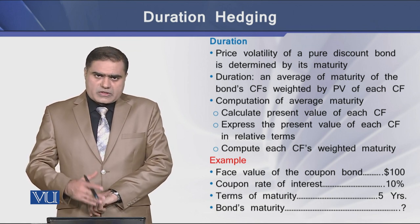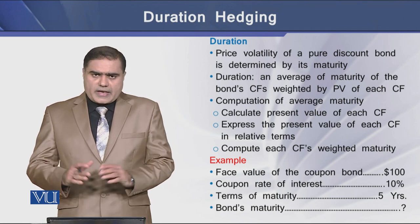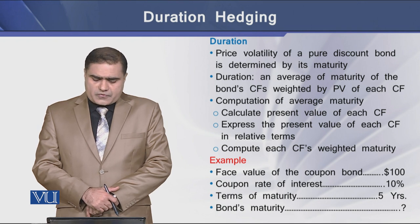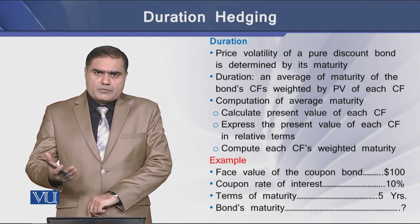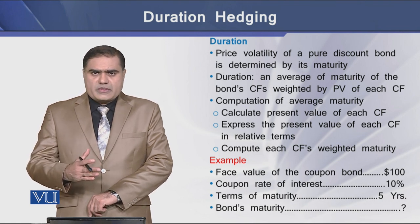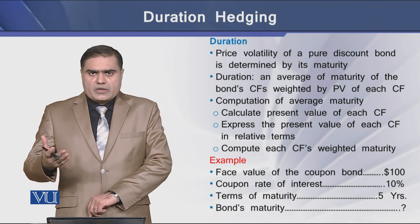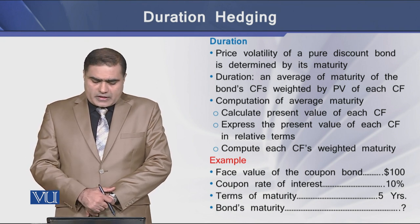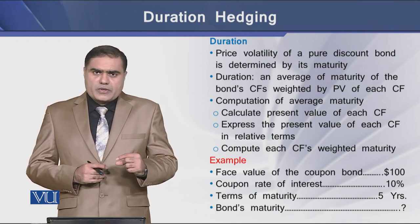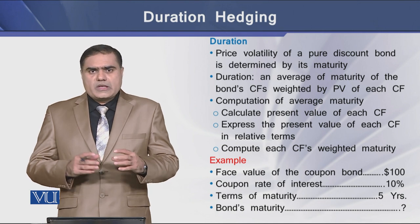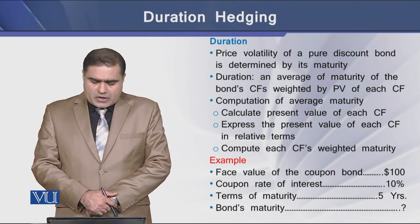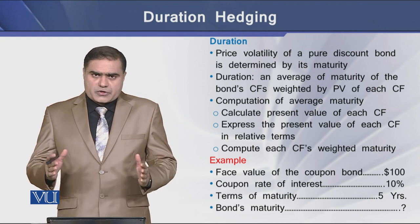How do we compute this average maturity of the bond? It happens in 3 steps. In the first step, we calculate the present value of each coupon of the bond — the periodic interest payment and the last cash flow on the face value. Then we develop a relationship between each individual periodic coupon cash flow and the total present value of the bond. In the third step, we compute each cash flow's weighted maturity.